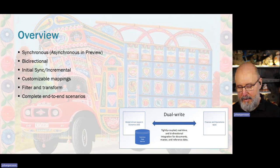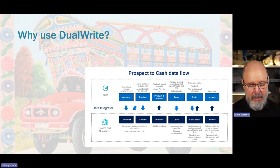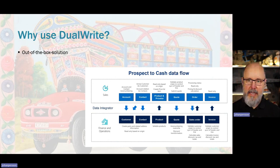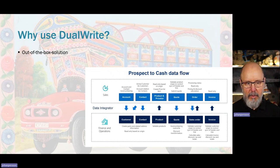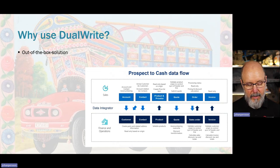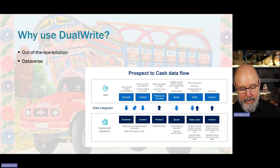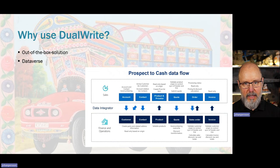Why should we use Dual Write? A lot of it is out of the box — that's not saying it's a next-next-finish solution; it is fairly complex to set up, especially since we have data in both platforms that doesn't necessarily match each other, so we will have to work around some data quality issues. But otherwise it is an out-of-the-box solution, so much of it is already created and set up. It is also a connection to Dataverse, and a lot of new FNO add-ons require Dataverse anyway.